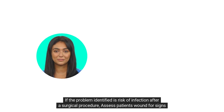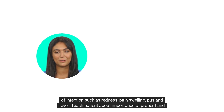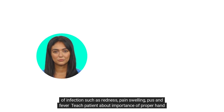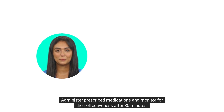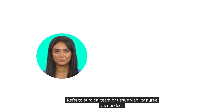If the problem identified is risk of infection after a surgical procedure, assess the patient's wound for signs of infection such as redness, pain, swelling, pus, and fever. Teach the patient about the importance of proper hand washing and wound care. Administer prescribed medications and monitor for their effectiveness after 30 minutes. Refer to the surgical team or tissue viability nurse as needed.